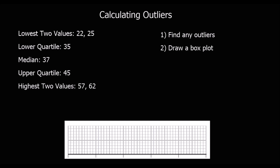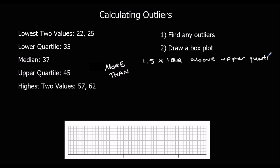In this video, we're going to look at calculating outliers. The method we're going to use is: an outlier is any number more than 1.5 times the interquartile range above the upper quartile, or any number more than 1.5 times the interquartile range below the lower quartile.